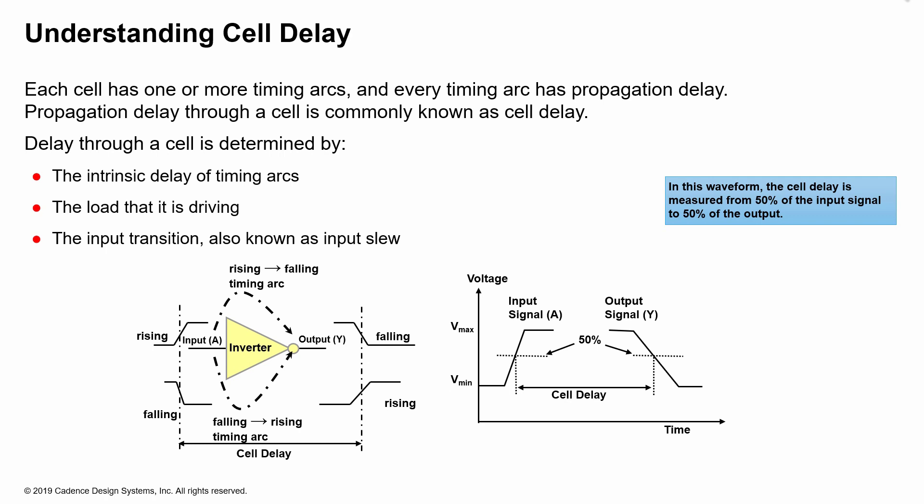As we saw before, each cell has one or more timing arcs, and each of these timing arcs have a delay associated with them. The propagation delay through the cell is commonly known as cell delay. We calculate cell delay based on the intrinsic delay of the timing arcs, what load it's driving - so basically we measure the output load. And then based on that load, we determine the delay of the cell and also what is the input transition.